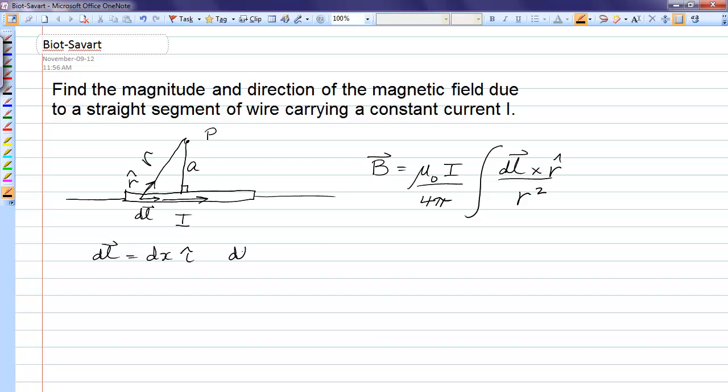If we take dl cross r-hat the magnitude of that would be the magnitude of i-hat, magnitude of r-hat, sine of the angle between i-hat and r-hat. And the direction you can see if you cross dl into r is out of the board, so that would be k-hat.